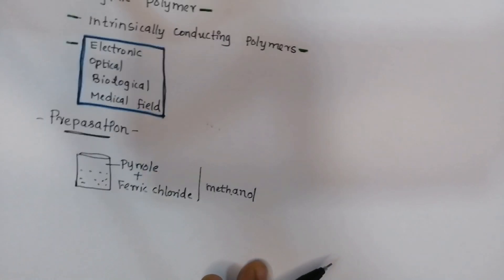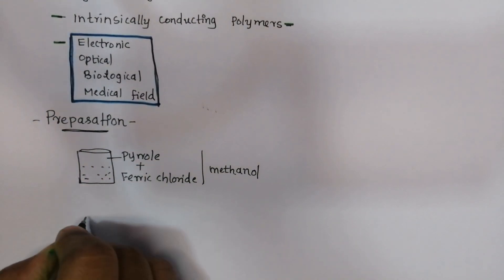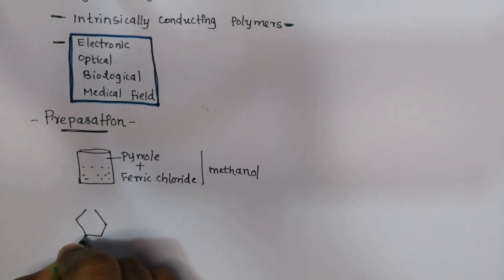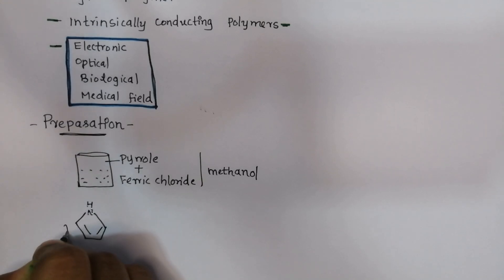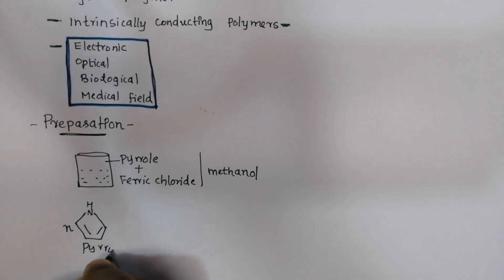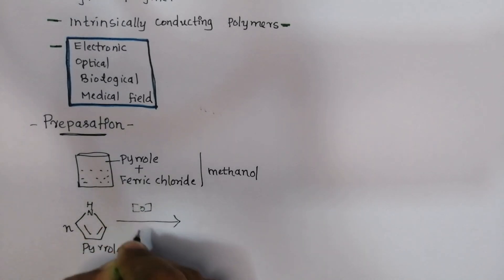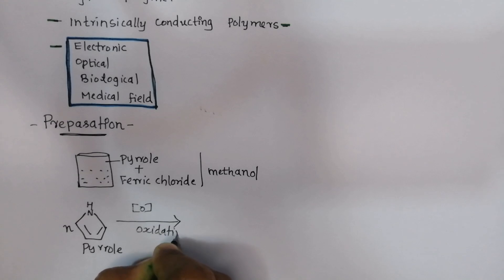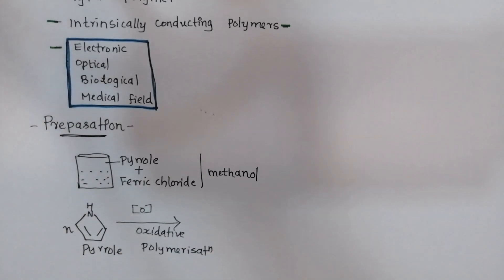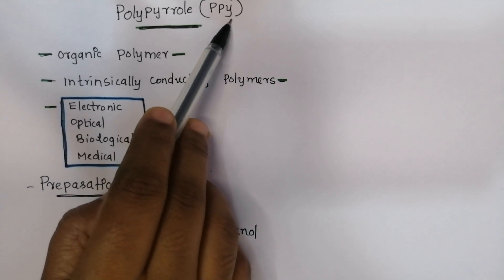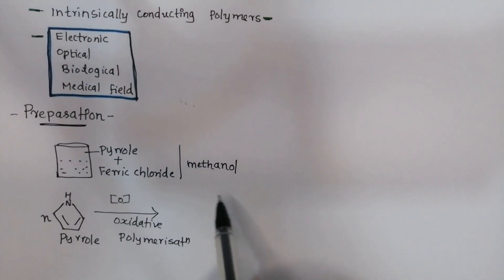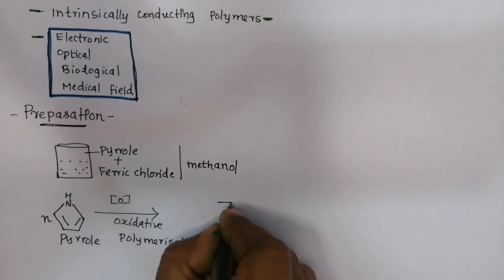Looking at the reaction: if you want to use pyrrole, the reaction involves its structure. This is pyrrole. Through oxidative polymerization, pyrrole forms a precipitate — that is polypyrrole. Polypyrrole is abbreviated as PPy. To convert the monomer to polymer, you repeat the structure.